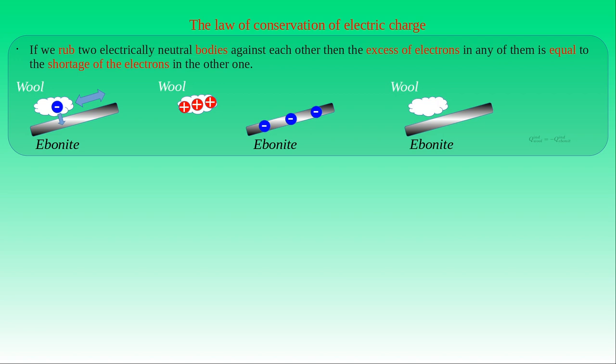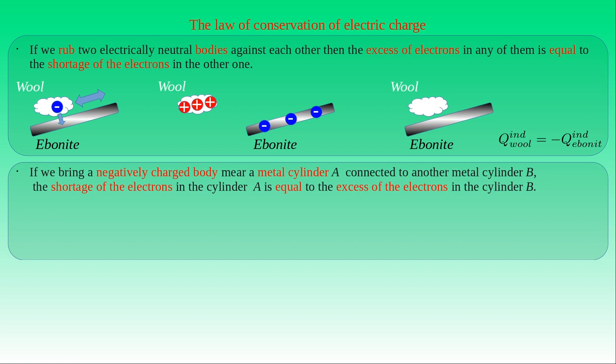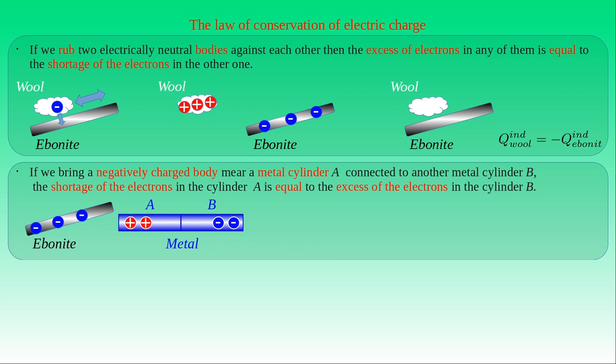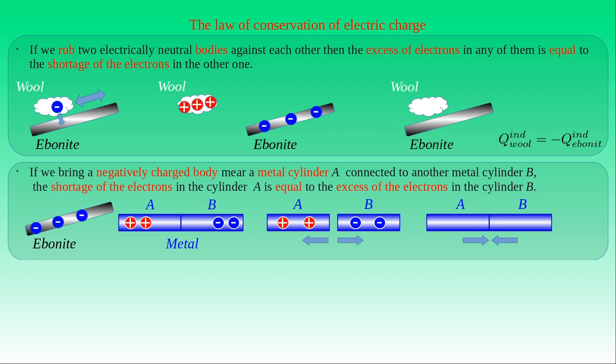This result could also be seen in experiments where charged bodies produced the separation of charge in bodies brought near them. In the experiment with the metal cylinders, we brought a negatively charged ebonite rod near the electrically neutral metal cylinders A and B kept in contact with each other. We demonstrated the charge separation when we separated them and removed the charged ebonite rod — cylinders A and B attained positive and negative charge respectively. When we brought the cylinders into contact again, both became electrically neutral. Therefore, the excess of electrons in cylinder B was the same as the shortage of them in cylinder A, showing that the two cylinders had the same amount of induced charge.